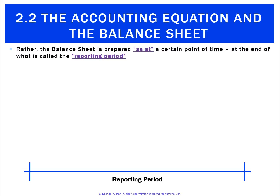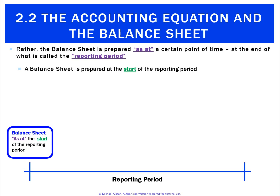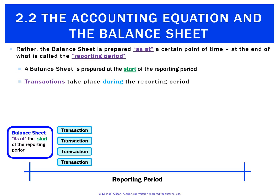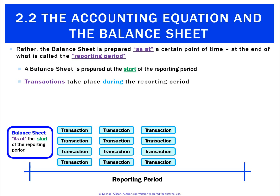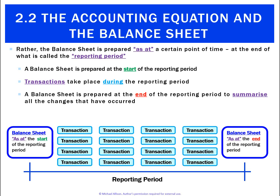What actually happens is the balance sheet is prepared as at a certain point in time, called the end of the reporting period. We'd have a balance sheet at the beginning of the period, transactions happen during the month, and then we do a final balance sheet at the end — whether that's monthly, quarterly, yearly, and so on.